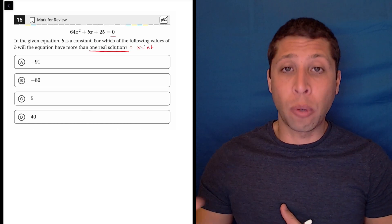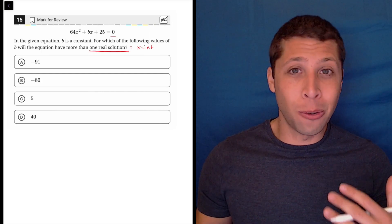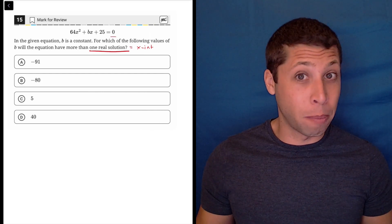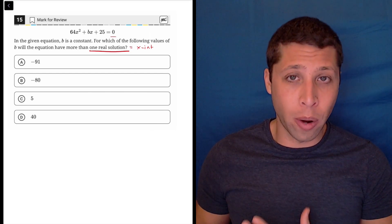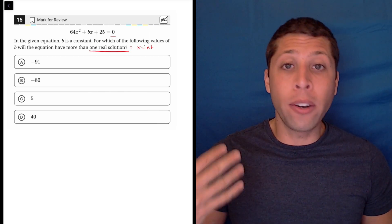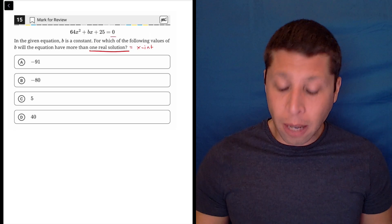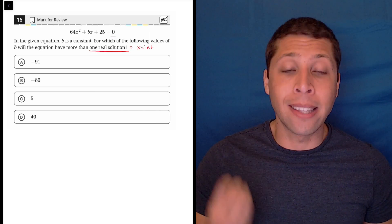So there is an algebra way to do this, which I will show you. But since it's a new test, maybe some new strategies are better for people. One thing we could do, since this question is multiple choice, is we could just create four different quadratic equations, substituting all these answers in for b, and seeing what we get.